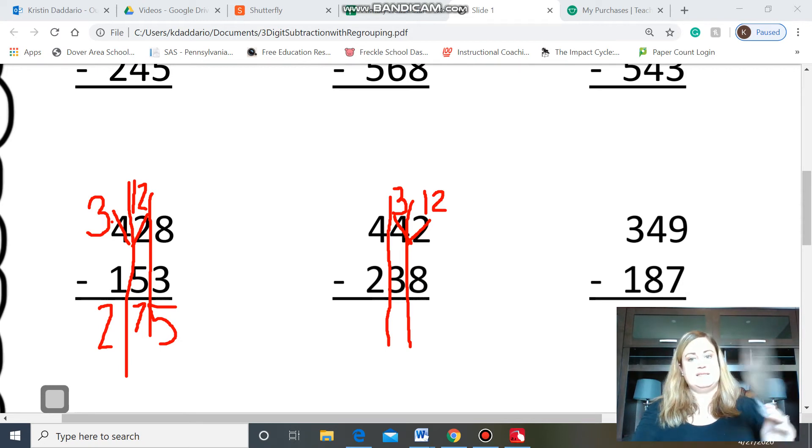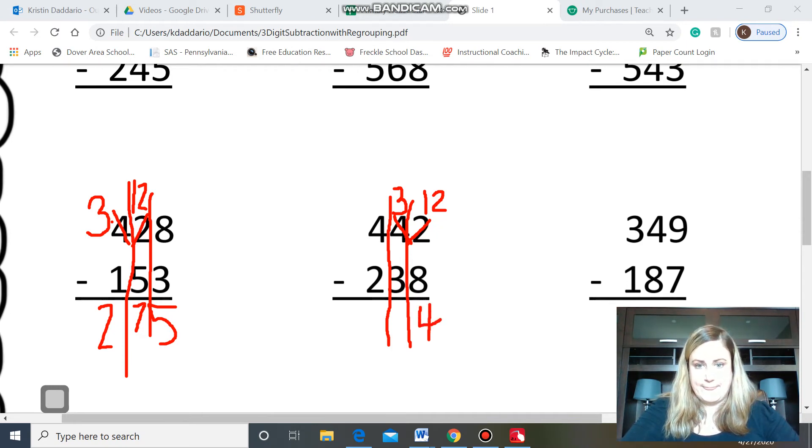Now I have twelve minus eight. So, I can start at twelve and jump back eight. One, two, three, four, five, six, seven, eight. So, four in my ones place. Then, I go to my tens place, and I have a three, because remember the four, we don't have anymore. We now have three tens minus three tens. Go back to our rules. Number's the same. Zero's the game. So, zero, and then four, take away two, I have two left. So, my answer is two hundred four.